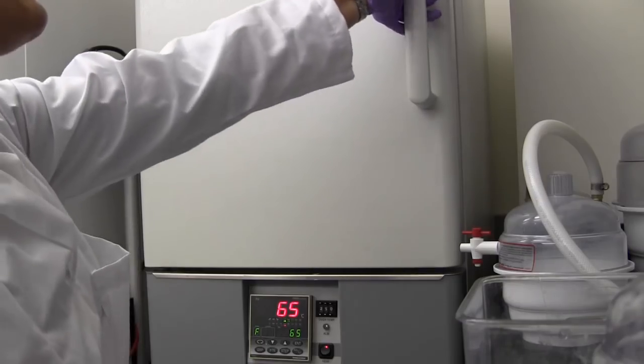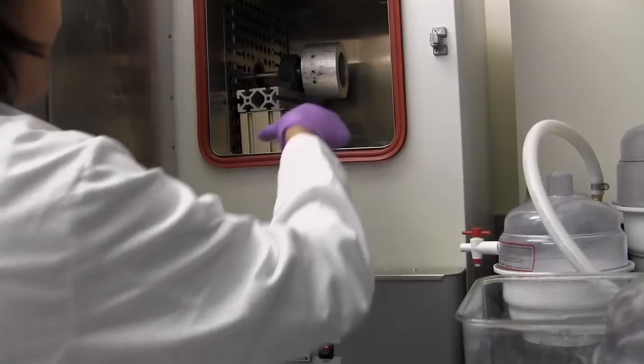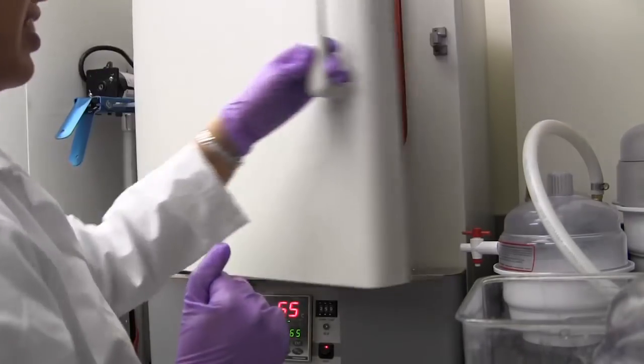Stick the plates into the oven at 65 degrees Celsius or 150 degrees Fahrenheit for one to two hours. Now let's zoom in and take a look at what's happening to our polymer.